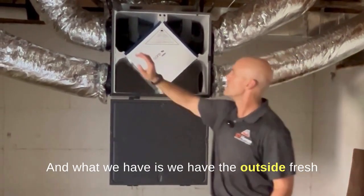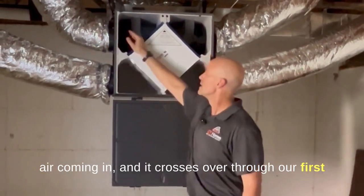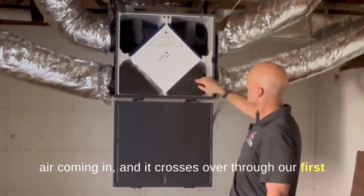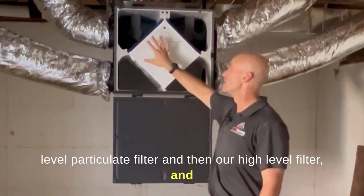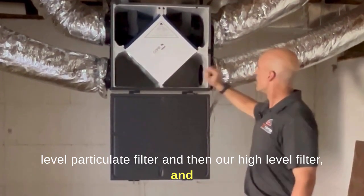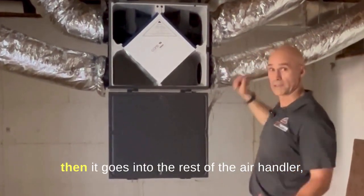What we have is the outside fresh air coming in, and it crosses over through our first-level particulate filter and then our high-level filter. And then it goes into the rest of the air handler, which is in the other room.